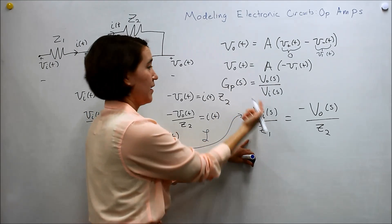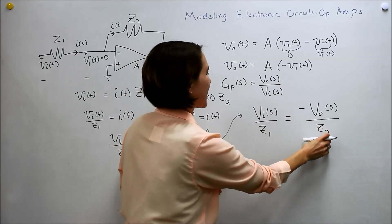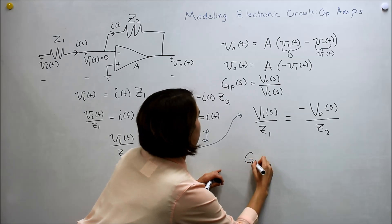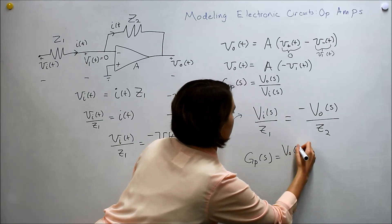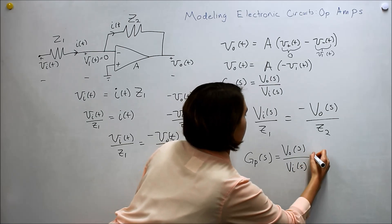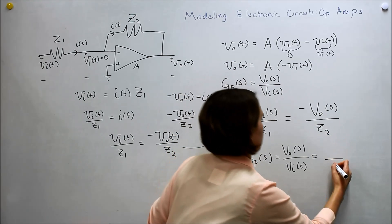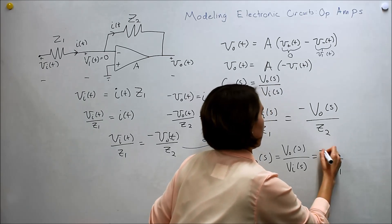We just want it to look like this. So we can move everything around again. So move that down there, move that up there. We'll get, start writing it here. GP of S equals V out of S over VI of S equals negative Z2 over Z1, and a negative here.